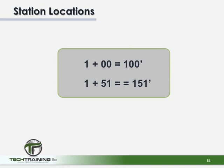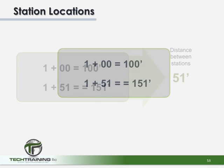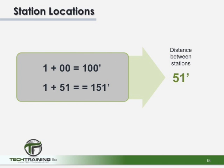In that example we were given the distance between the two points. Going back to our previous discussion on stations, can you calculate the distance between two station points? Here the distance is pretty simple — it is 51 feet. Station 1+00 is the 100-foot mark, and station 1+51 is the 151-foot mark, so the distance between the two is obviously 51 feet.